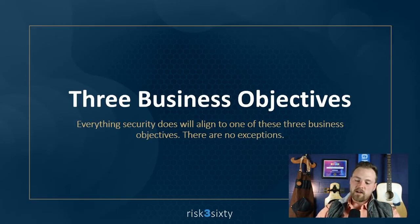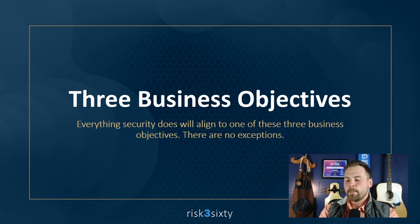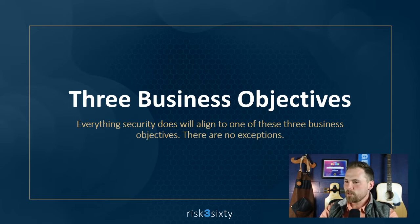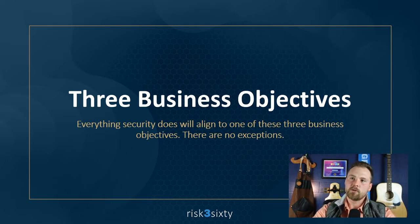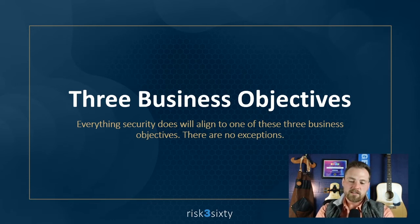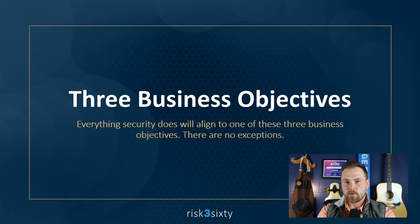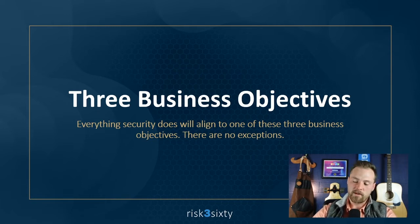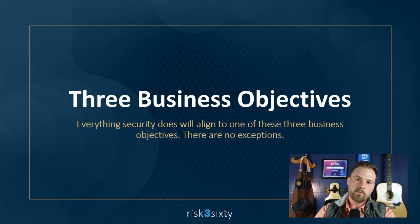Now that we've talked about what kind of archetype you might be, the second piece is understanding what the business objectives for your organization are. The good news is there are only three business objectives that companies have that impact the direction of security — virtually everything you do in security will align to one of them. Understanding these will make you a great security executive because you'll understand the executives' why, speak their language, and prioritize your security objectives in a way that directly supports the business.